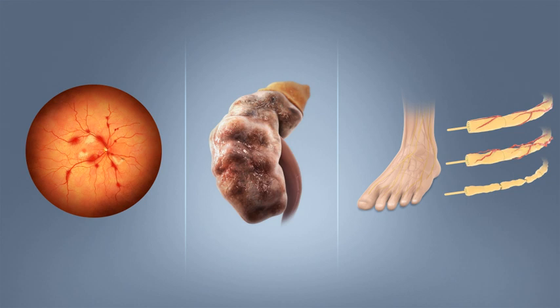Insulin is the principal hormone that regulates the uptake of glucose from the blood into most cells of the body, especially liver, adipose tissue and muscle, except smooth muscle, in which insulin acts via the IGF-1. Deficiency of insulin or the insensitivity of its receptors plays a central role in all forms of diabetes mellitus. The body obtains glucose from three main sources: the intestinal absorption of food, the breakdown of glycogen (glycogenolysis), the storage form of glucose found in the liver, and gluconeogenesis, the generation of glucose from non-carbohydrate substrates in the body.